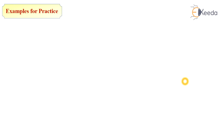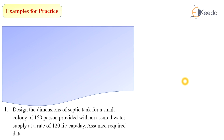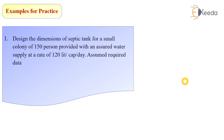These are two kinds of problems that will be asked in your examination. In the first type, you simply find out the capacity and dimensions of the septic tank. In the second type, in addition to the previous, you also calculate the dimensions of the soak well. These are some practice examples shortlisted from previous question papers: design dimensions of a septic tank for a small colony of 150 persons with an assured water supply rate of 120 liters per capita per day.